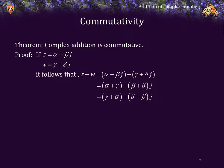This expression is simply the sum of gamma plus delta j plus alpha plus beta j. And that is equal to w plus z. Thus, z plus w is equal to w plus z. Complex addition is commutative.